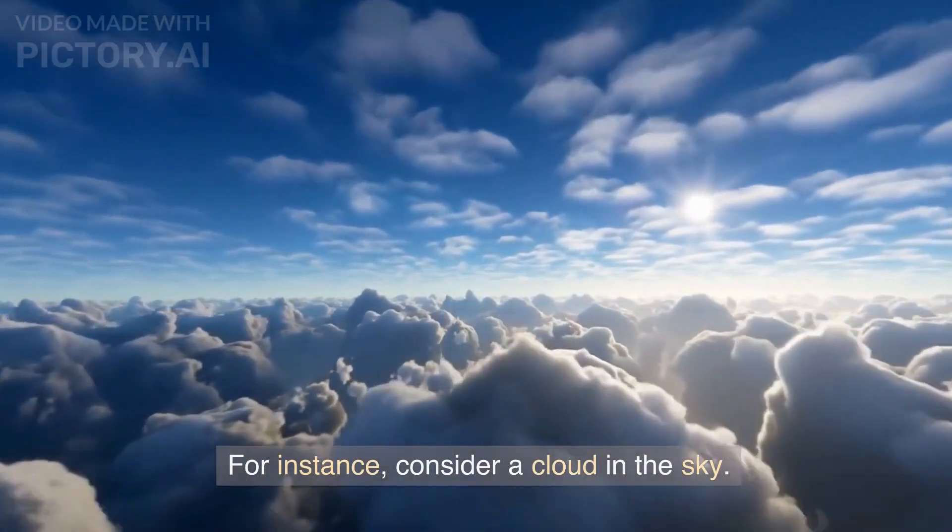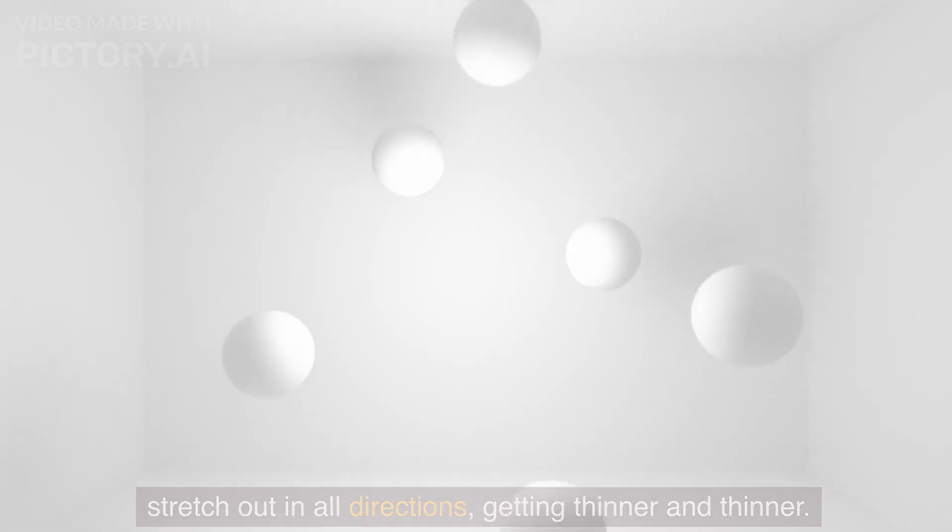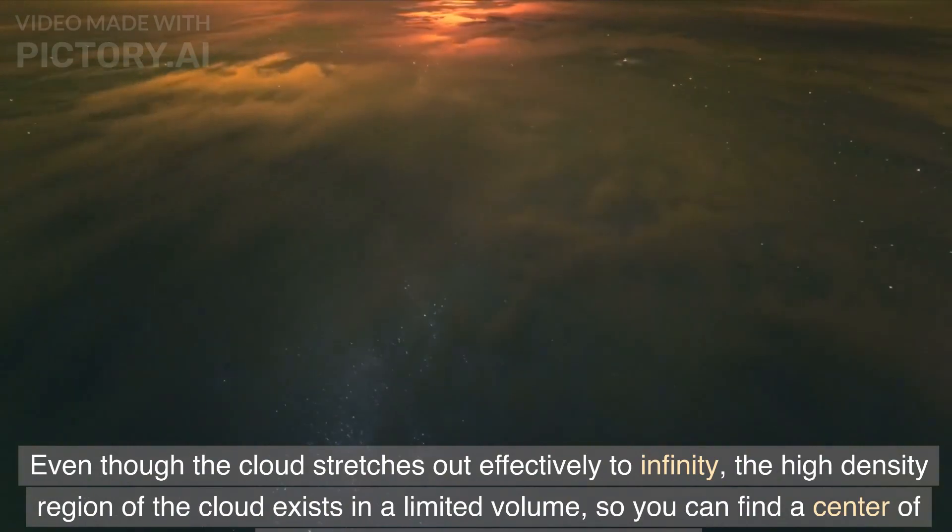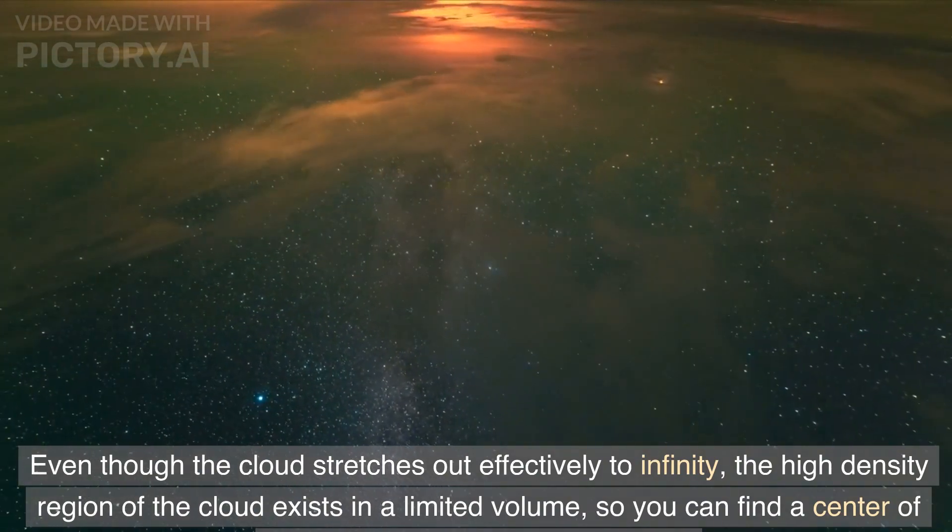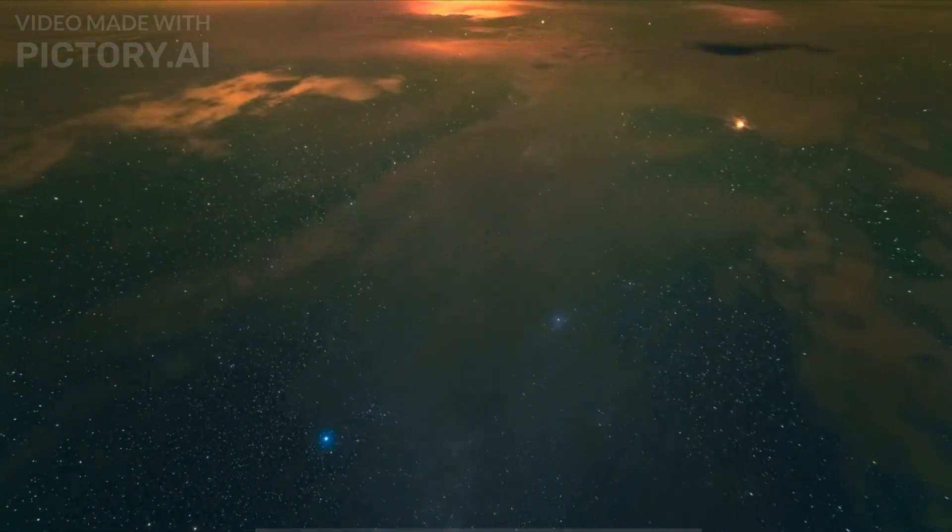For instance, consider a cloud in the sky. Certain kinds of clouds don't have a well-defined boundary, but instead just stretch out in all directions, getting thinner and thinner. Even though the cloud stretches out effectively to infinity, the high-density region of the cloud exists in a limited volume, so you can find a center of mass through a limiting procedure.